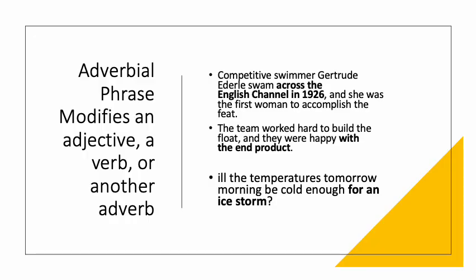Let's look at adverbial phrases modifying an adjective, verb, or another adverb. 'Competitive swimmer Gertrude Ederle swam across the English Channel in 1926 and she was the first woman to accomplish the feat.' 'The team worked hard to build the float and they were happy with the end product.' Happy with the end product — with the end product modifies the adjective happy. 'Will the temperatures tomorrow morning be cold enough for an ice storm?' Enough is an adverb and for an ice storm modifies it.